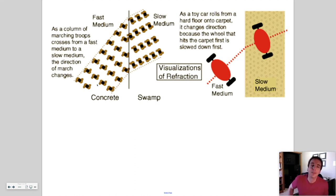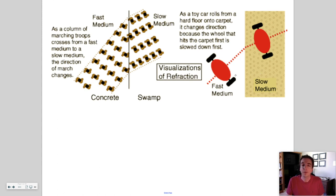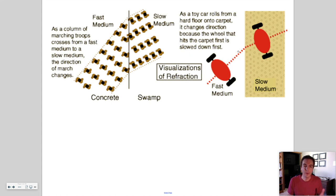The same thing applies to a toy car moving from a fast medium like hardwood onto carpet. As the car passes the boundary, the right wheel hits the carpet first and slows down before the left wheel, resulting in a change in direction — the car has refracted. This is just an analogy; waves do the same thing. It helps us visualize why there is a change in direction: because of a change in speed.